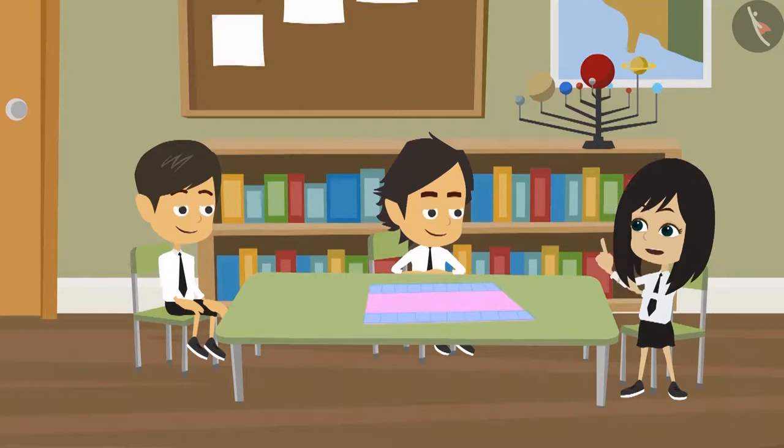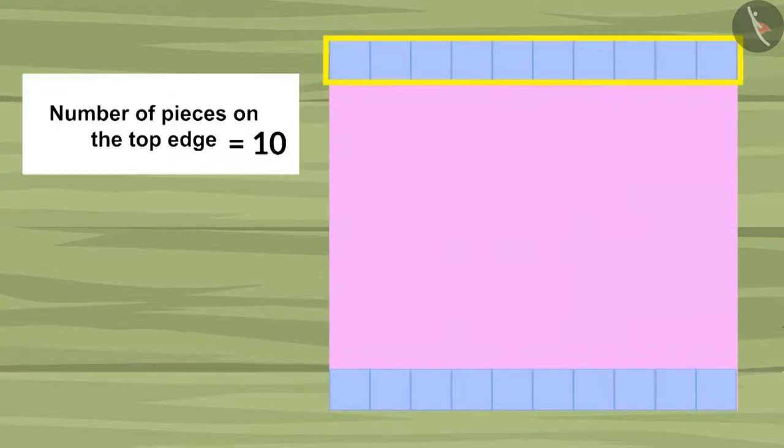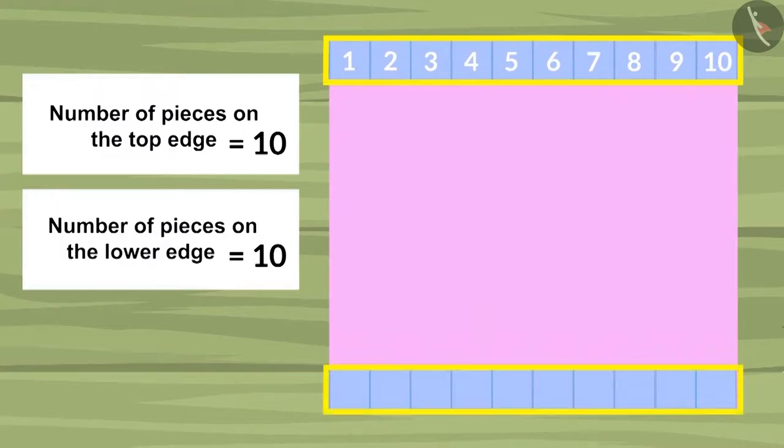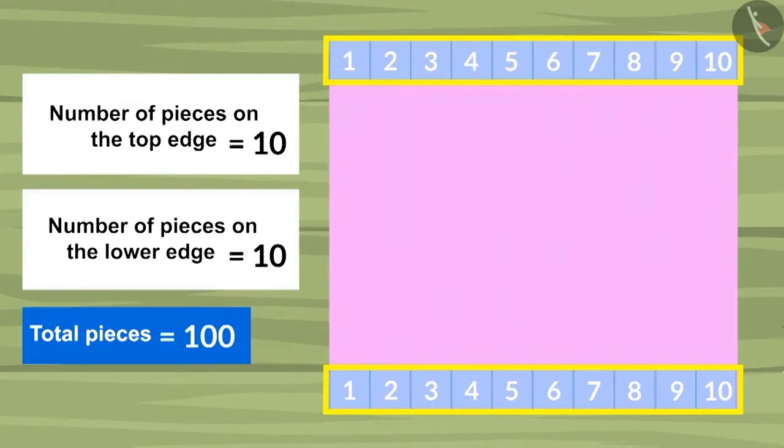See, when you have to measure a shape with fewer pieces, then we multiply the number of pieces placed on two sides. Yes, there are pieces placed on two sides. Now we can multiply them. There are 10 pieces placed on the top edge and there are 10 pieces placed on the lower edge. When we multiply them, we get the answer 100. This answer is incorrect.